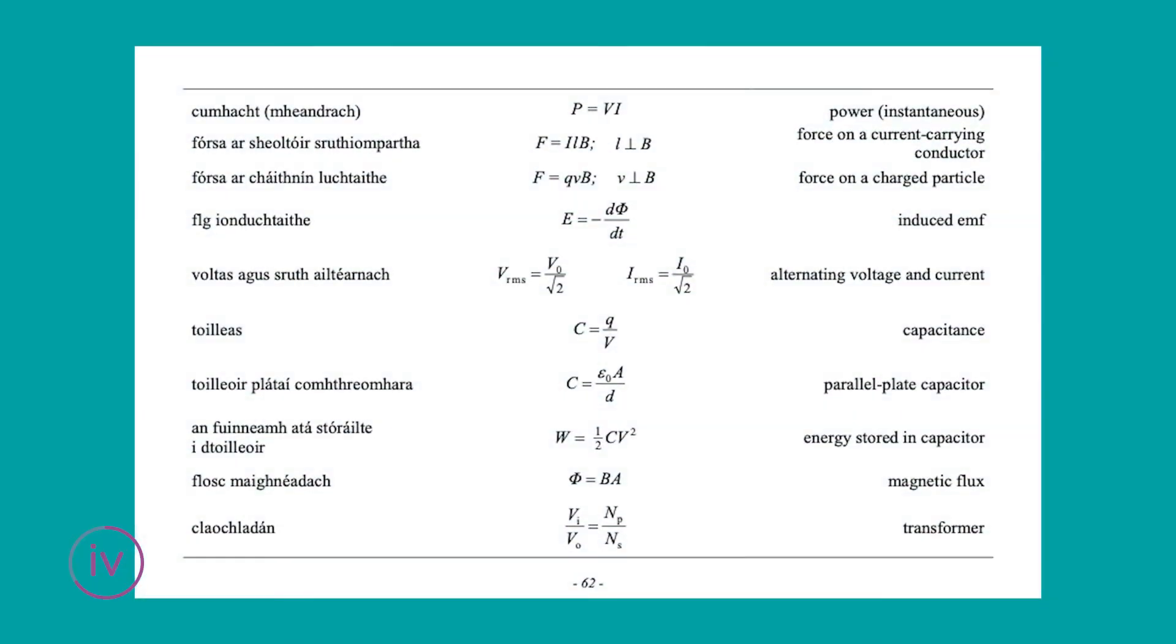Before moving on to the derivation in part five, let's look at the formulae we will use in this part. We're going to turn to page 62 of our formulae in tables books. We're going to look at the formula for a force on a current carrying conductor, and we're also going to look up the formula for the force on a charged particle.